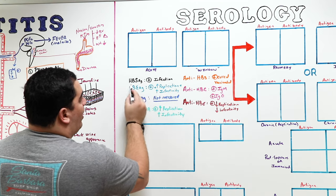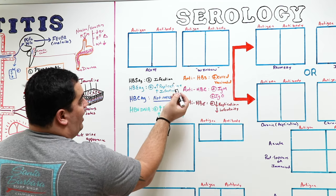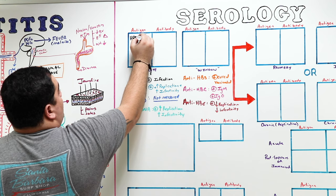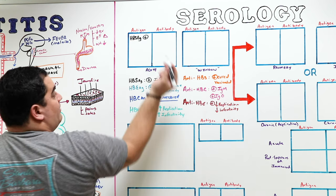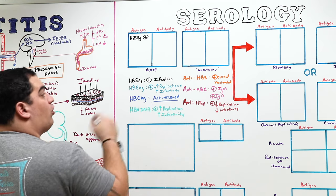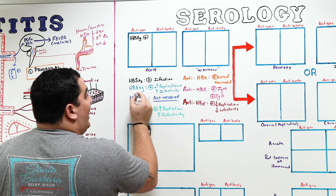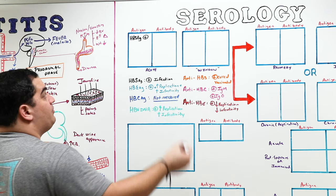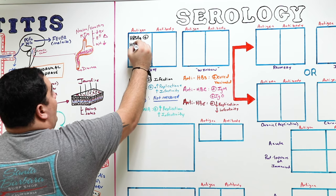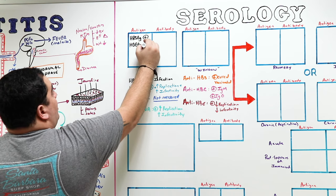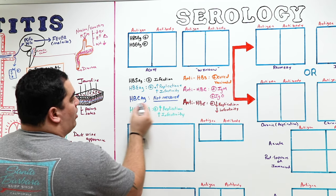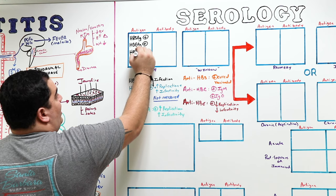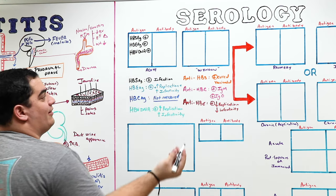In an acute infection, the surface antigen — HBsAg — should be positive since the patient is infected. The hepatitis B virus envelope antigen should also be positive because the virus is actively replicating. We don't look at the core antigen directly, but we do look at HBV DNA — and HBV DNA is going to be positive as well.